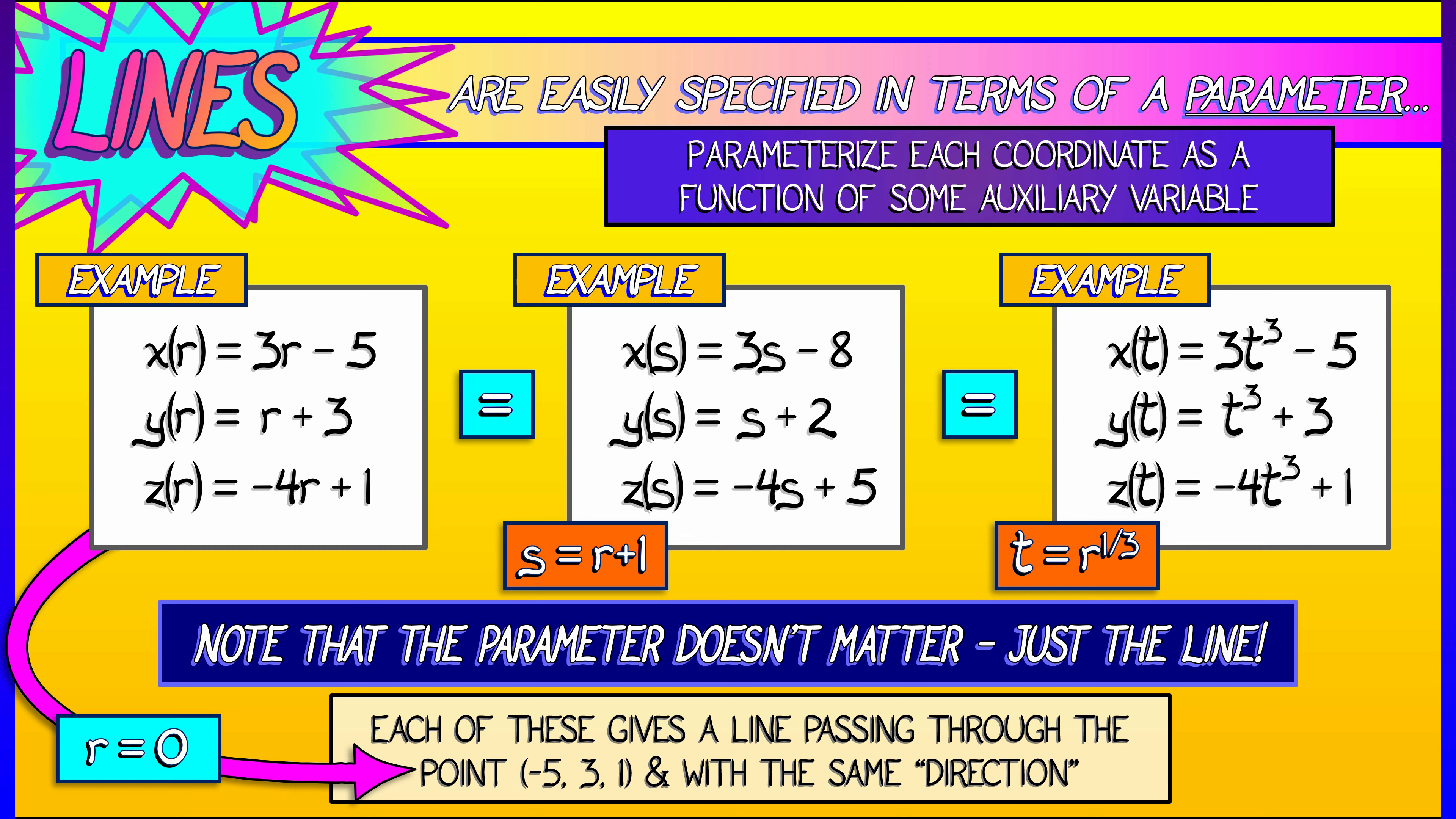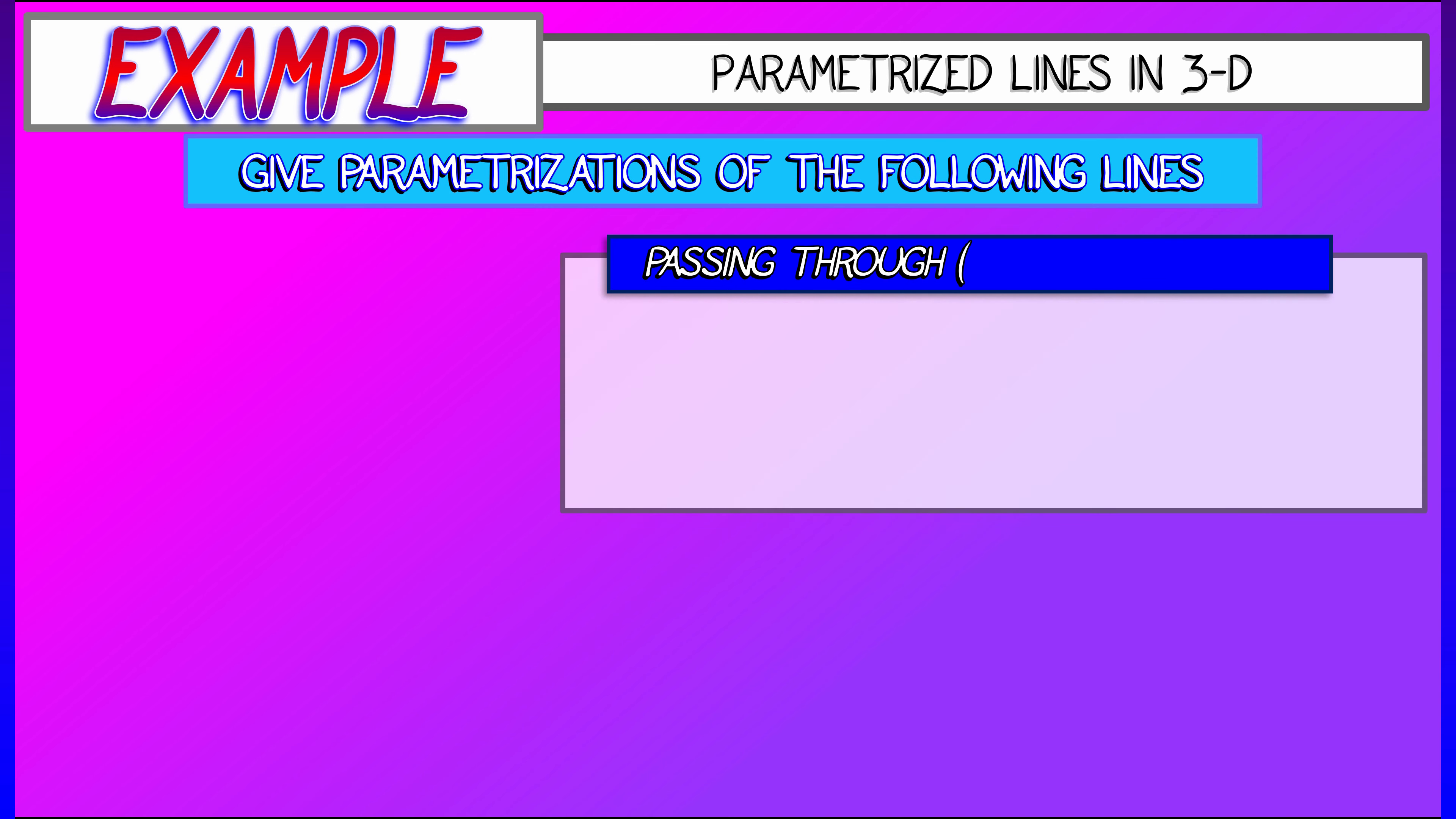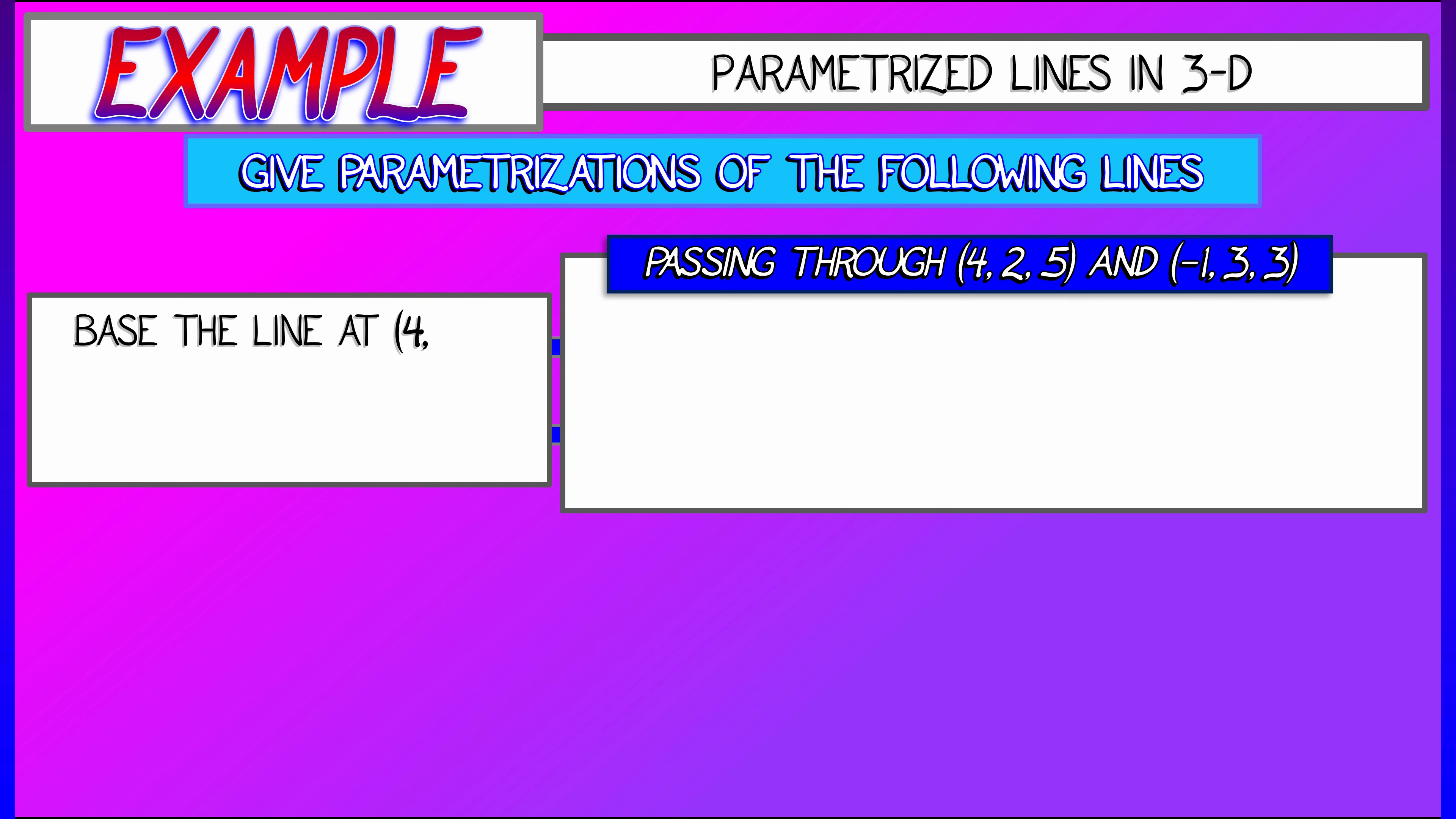Now, let's get some of that practice. Let's say I ask you for a line passing through the points 4, 2, 5, and negative 1, 3, 3. Okay, I'm going to choose, let's say, the first one as a base point. And then, to figure out the directions, I'm going to look at the changes in the x, y, and z coordinates as I move from one point to another. So I'm going to say x of t is the change in x, negative 1 minus 4 times t, plus the initial x coordinate, 4.